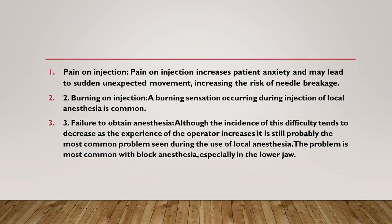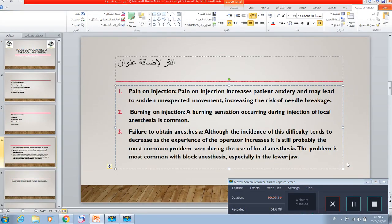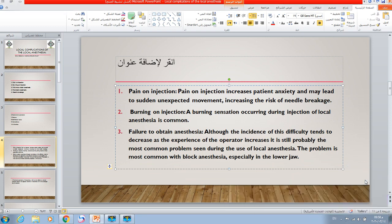A second cause is anatomical variation — there may be accessory nerve supply, an abnormal course of the nerve, variation in the foramen location, or the tooth may be innervated by more than one nerve. This complication may also be due to pathological causes.